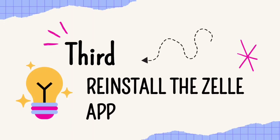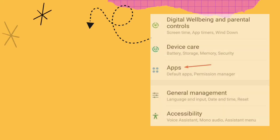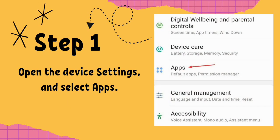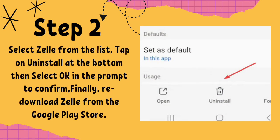Third, reinstall the Zelle app. Step 1: Open the device settings and select Apps. Step 2: Select Zelle from the list. Tap on Uninstall at the bottom, then select OK in the prompt to confirm. Finally, re-download Zelle from the Google Play Store.